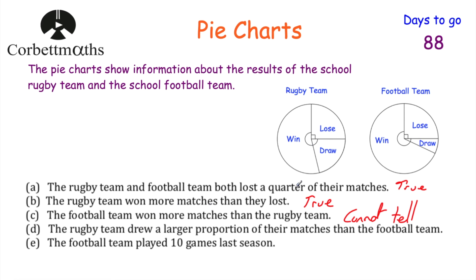Statement four: the rugby team drew a larger proportion of their matches than the football team. Looking at the pie charts, the rugby team drew almost a quarter of their matches, whereas the football team didn't draw many. The rugby team's draw sector is larger, so they drew a larger proportion — that's true.